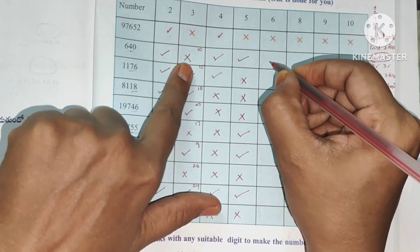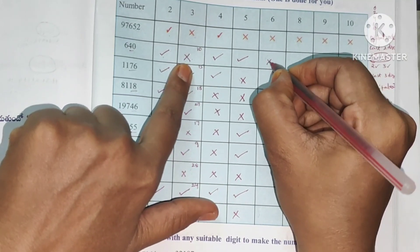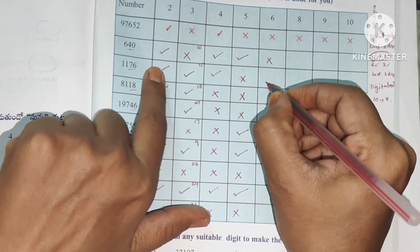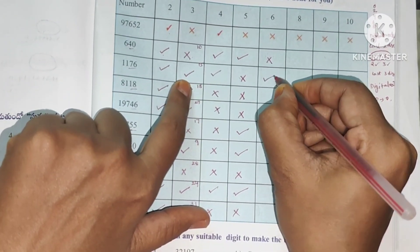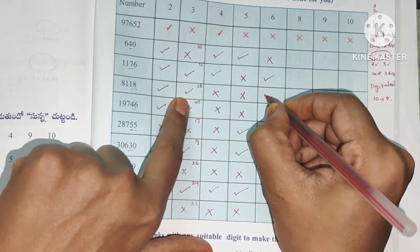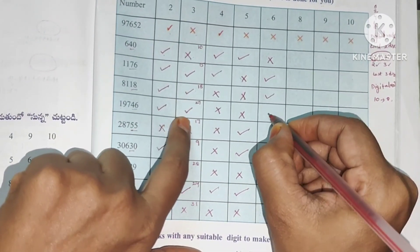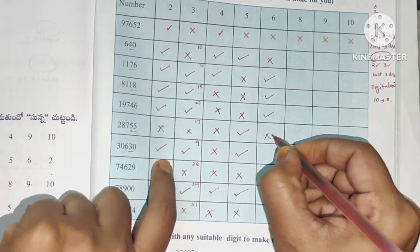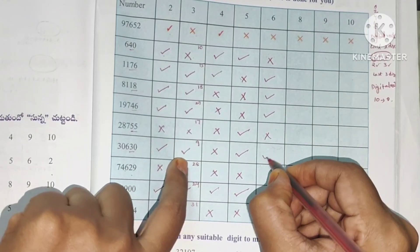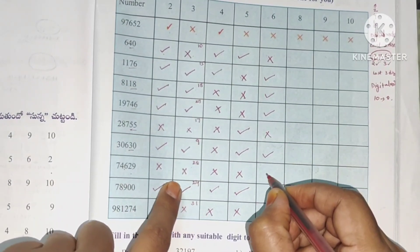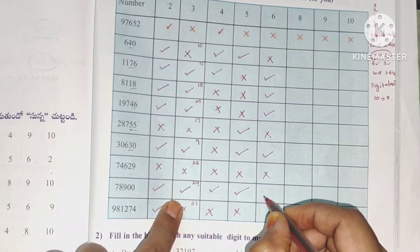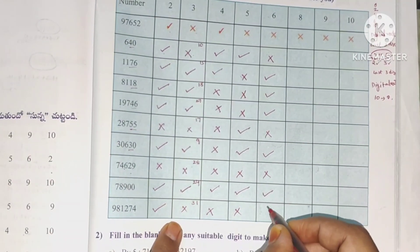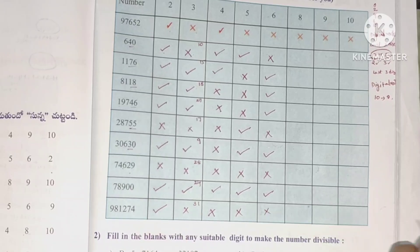For divisibility by 6, a number must be divisible by both 2 and 3. Check both conditions: 0 is there — if divisible by 2 and 3, tick yes; otherwise no. Going through each: yes, yes, yes, yes, no, yes, no.